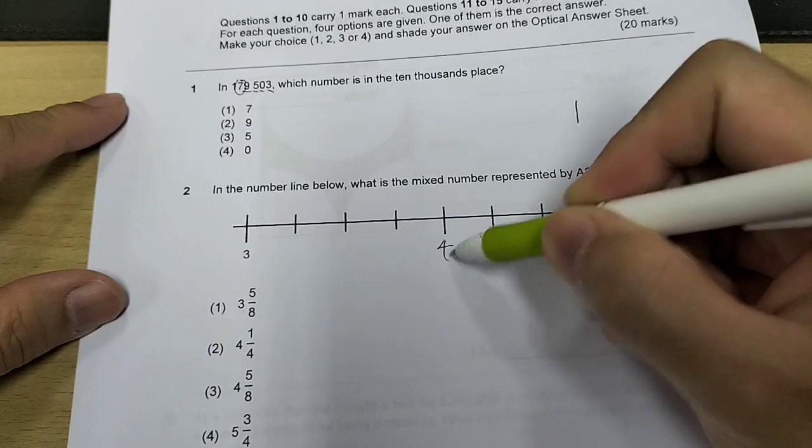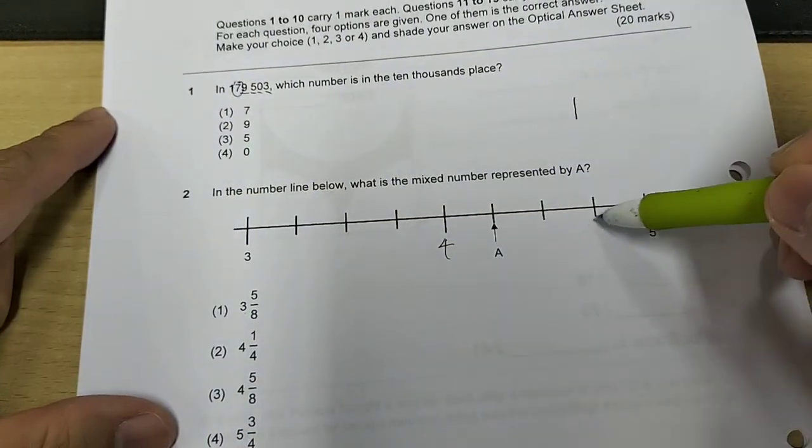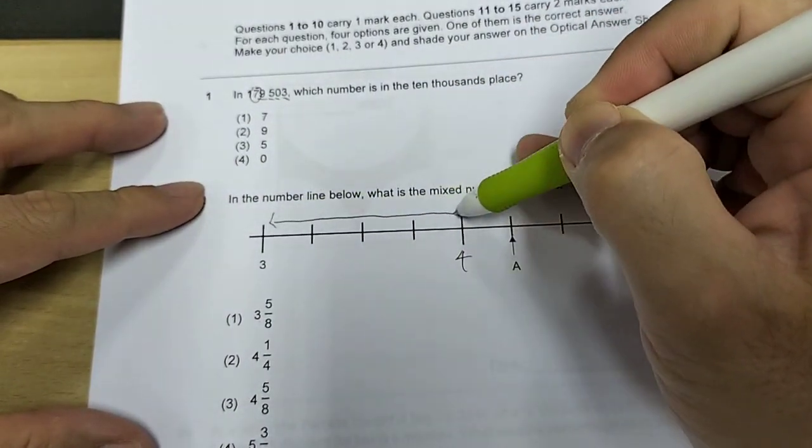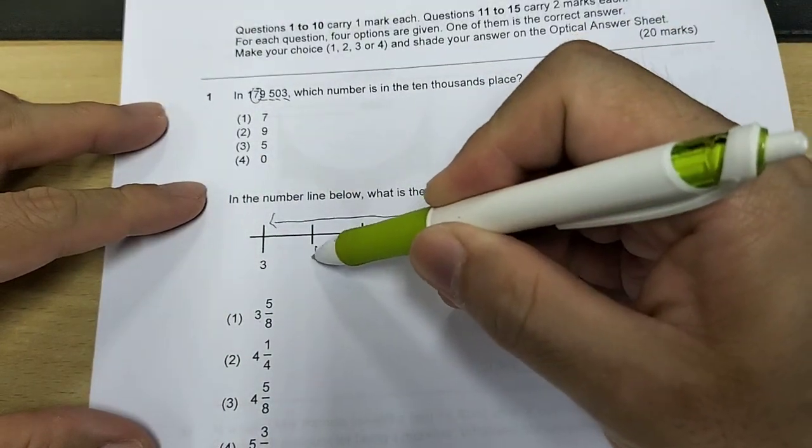So this one should be 4 right? 3, then 1, 2, 3, 4, 1, 2, 3, 4. Now this value here is a value of 1 whole. Let's divide it into 4 equal parts. Therefore each of these must be 1 quarter.